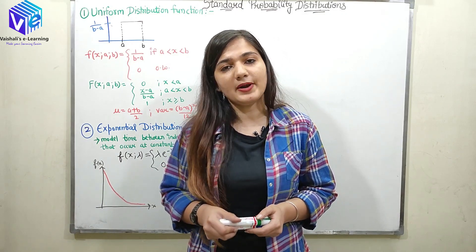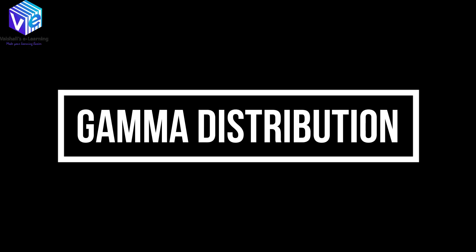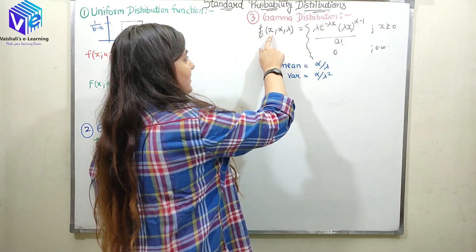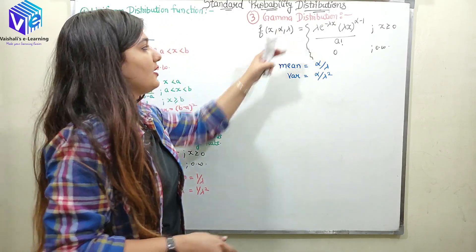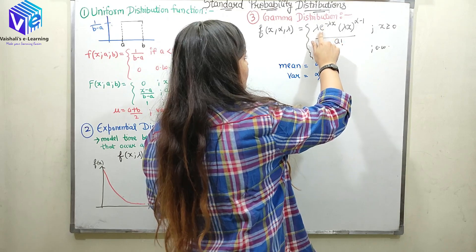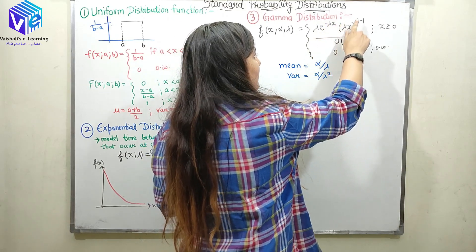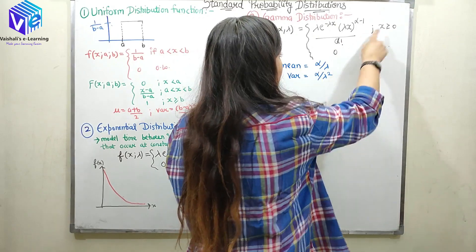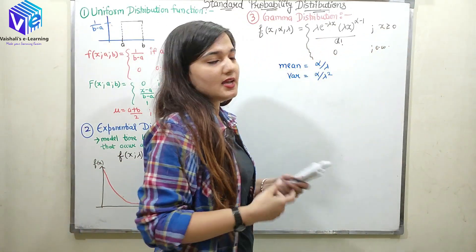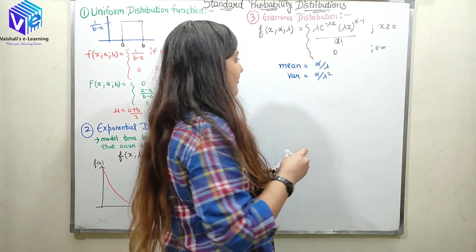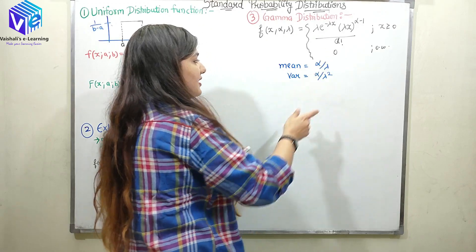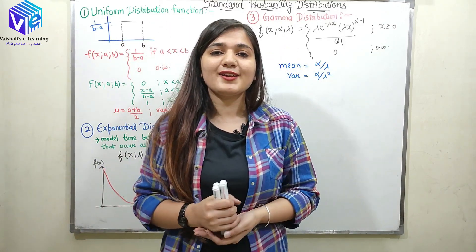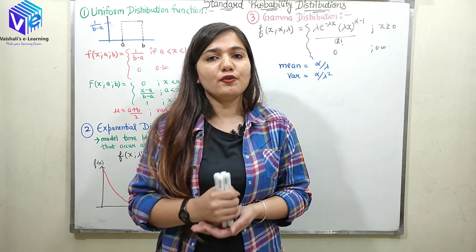The next distribution is the gamma distribution. The gamma distribution has a PDF which depends upon the variables alpha (α) and lambda (λ). It is equal to λ · e^(−λx) · (λx)^(α−1) / Γ(α) when x is greater than or equal to 0, and 0 otherwise — it is not defined for negative values of x. Mean is equal to α/λ and variance is equal to α/λ². Finding mean and variance for this function would be a tedious task, so you can try it out in your free time.